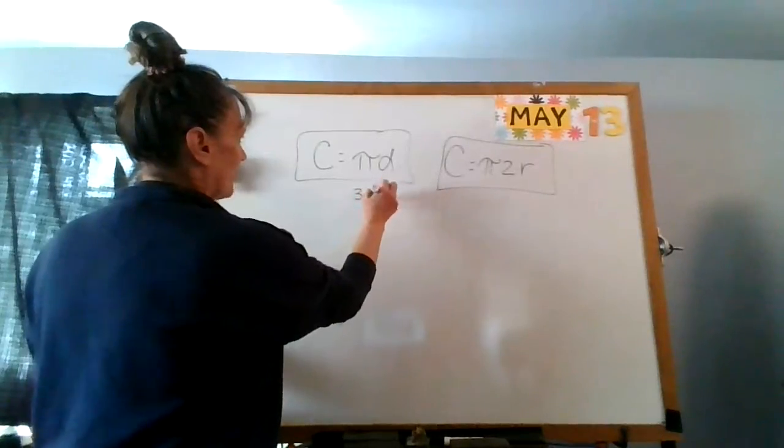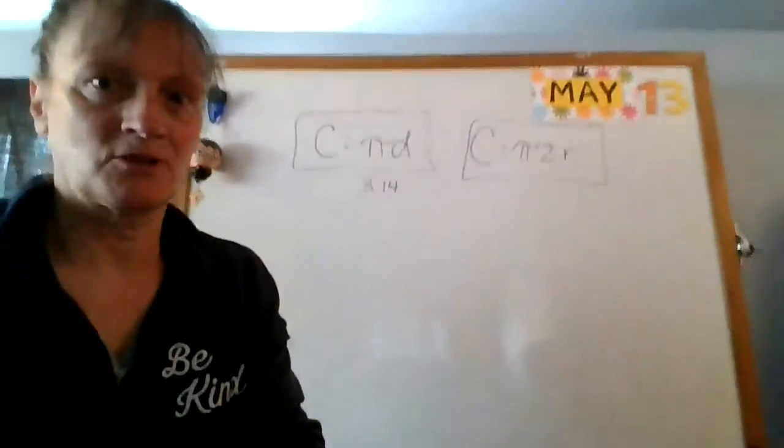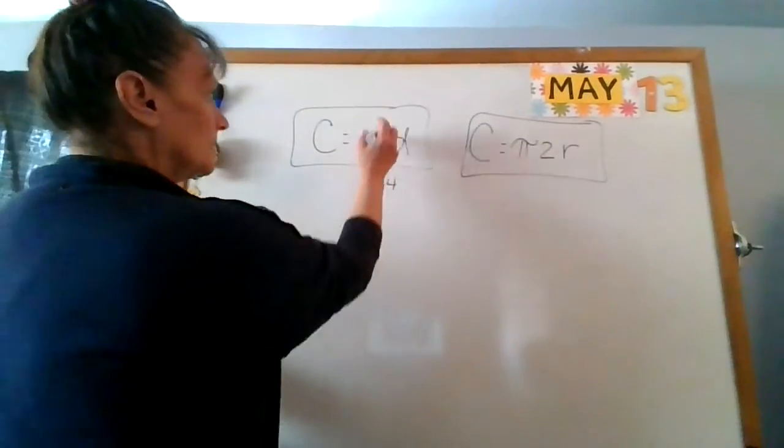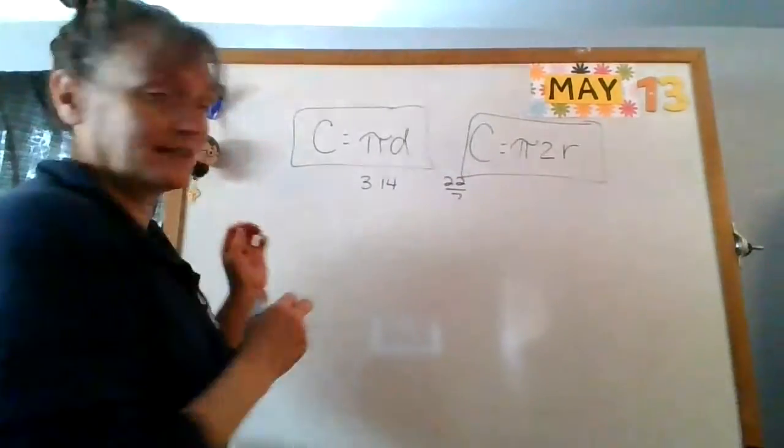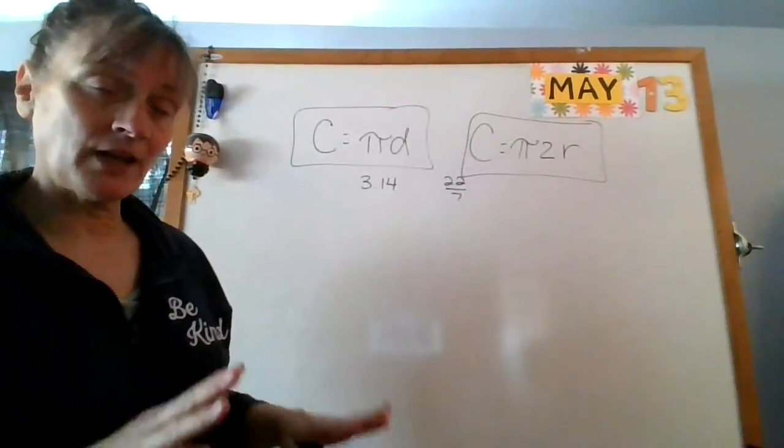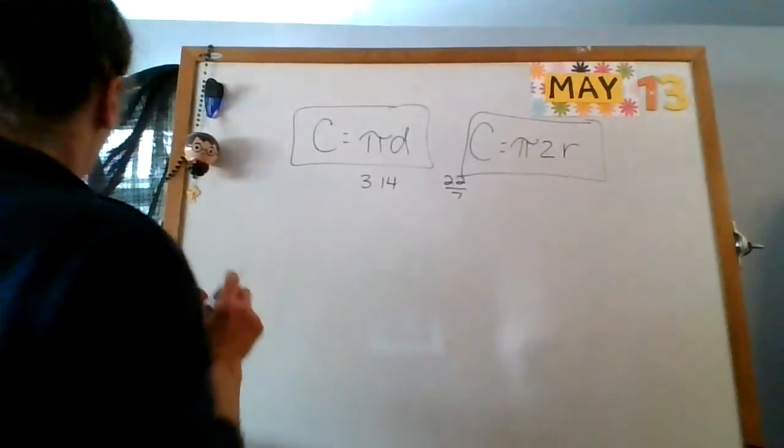I'm going to use 3.14. I have no idea how long ago this stopped, so I'm trying to do it fast. 3.14 is what I'm going to use for pi for the most part. 22 sevenths is the other thing that I can use. The book for now will tell you which one to use.